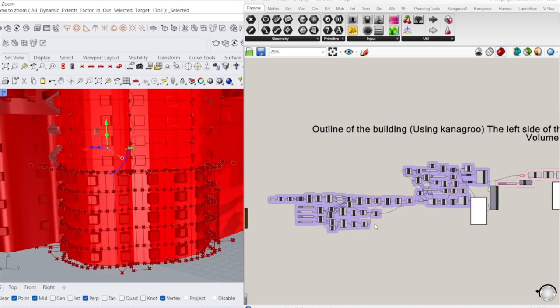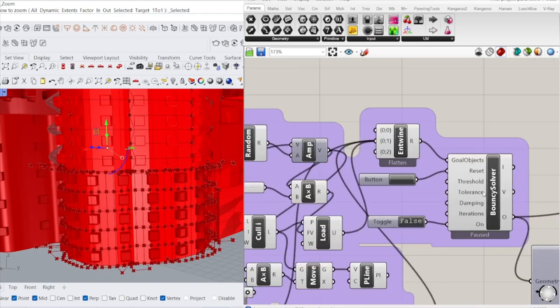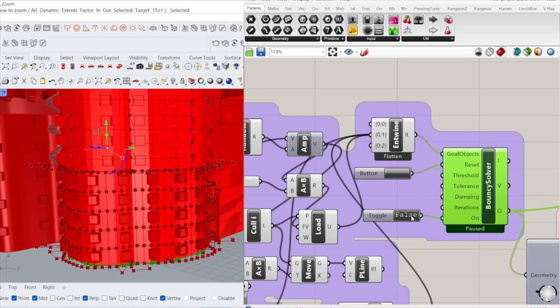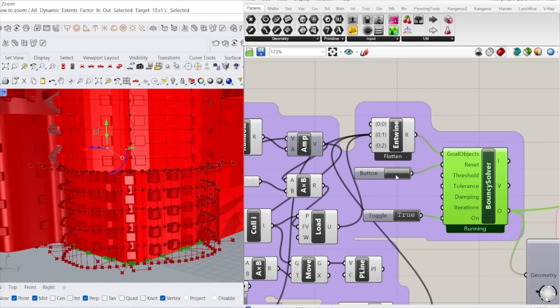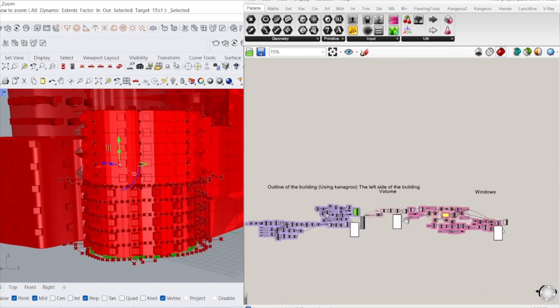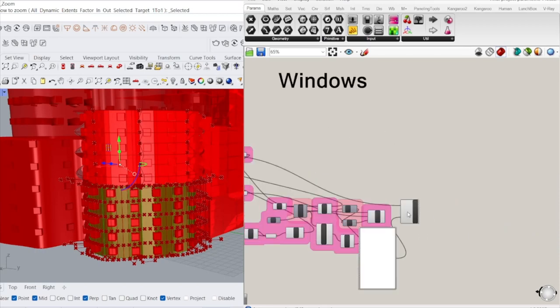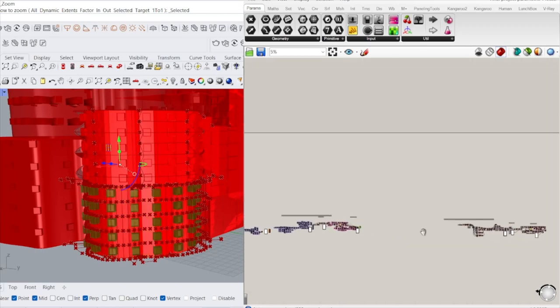I wanted to show you the outline of the building using kangaroo solver, kangaroo physics. I wanted to have the exact curvature, so I used the kangaroo physics to apply that. It would give me an exact curvature of the building. Moving forward, we would have the volumes and the windows of the building itself.